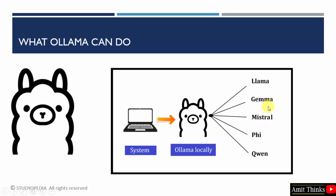GAMMA is by Google and LLAMA is by Meta. In this way, you can easily run all these models using OLAMA locally. In this video, we saw what is OLAMA, why it is being widely used, and what are its features. Thank you for watching the video.